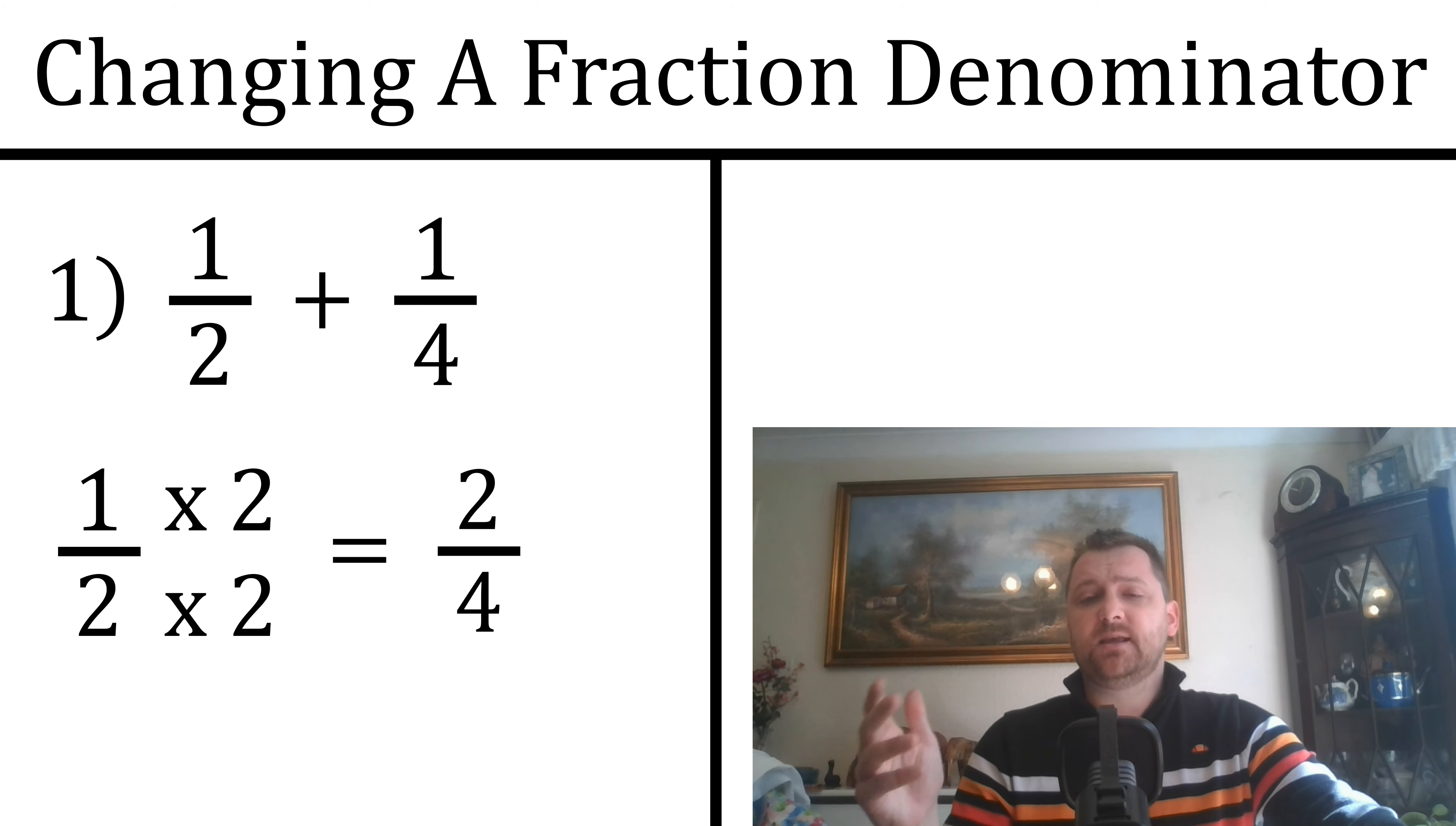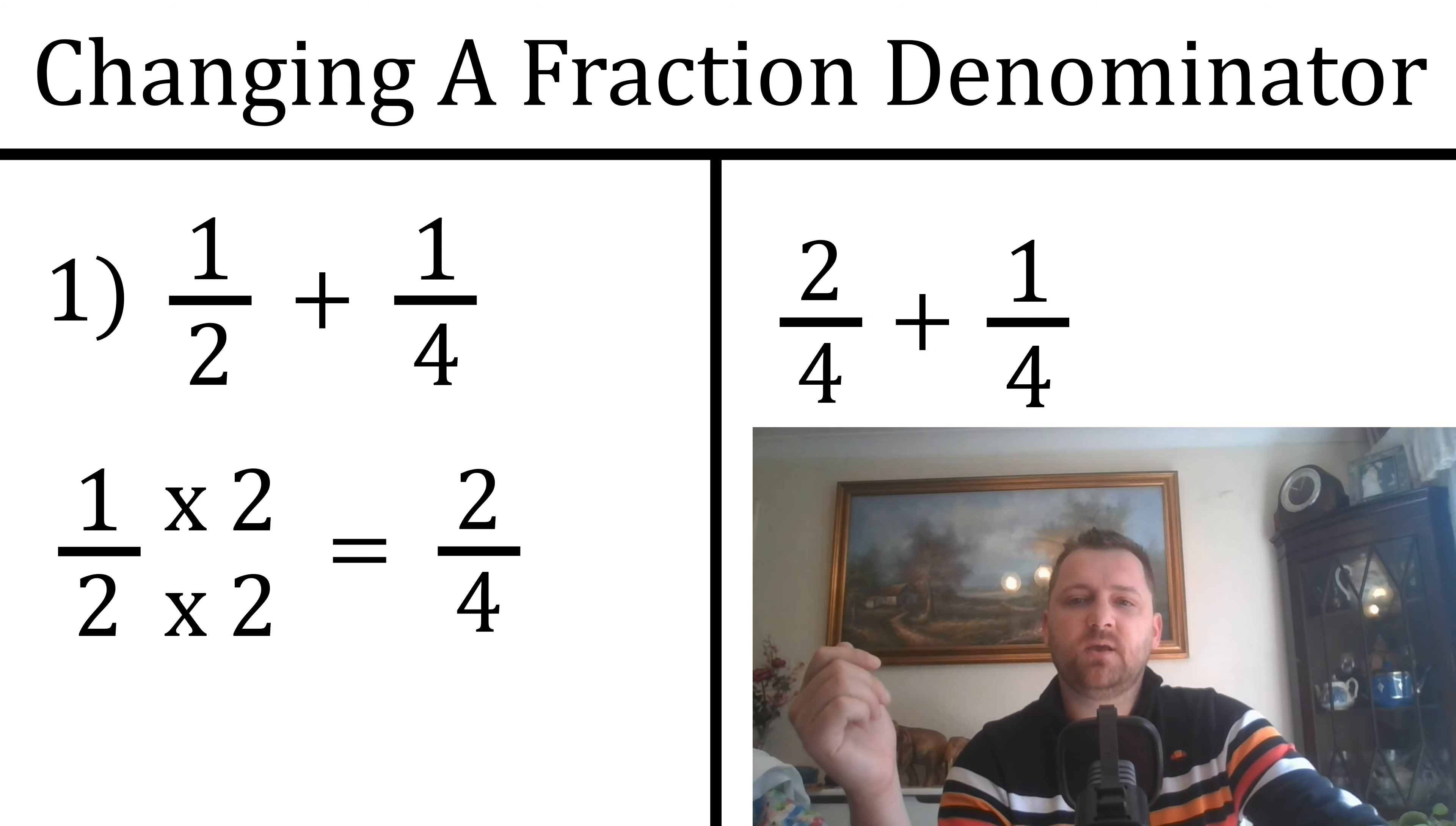Now we have the same denominator. We still have a half, but we have a 4 on the bottom, which means we can add it to the quarter. We take the 2/4, which is our half, and add that to the quarter, and that equals 3/4—our final answer.